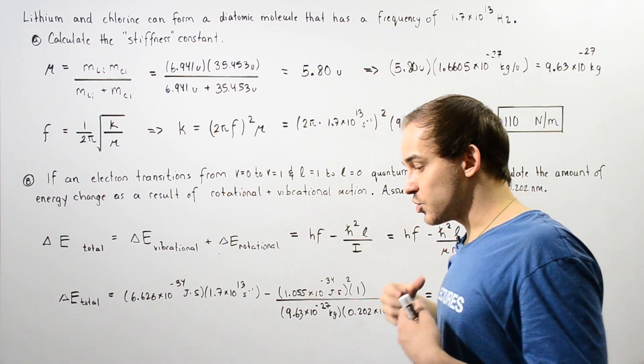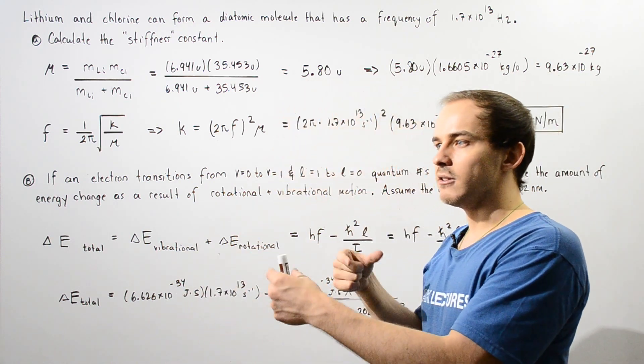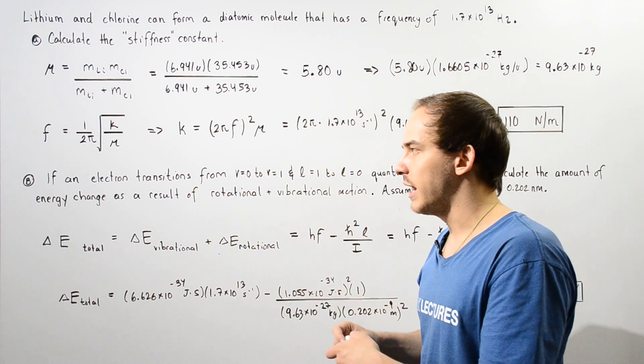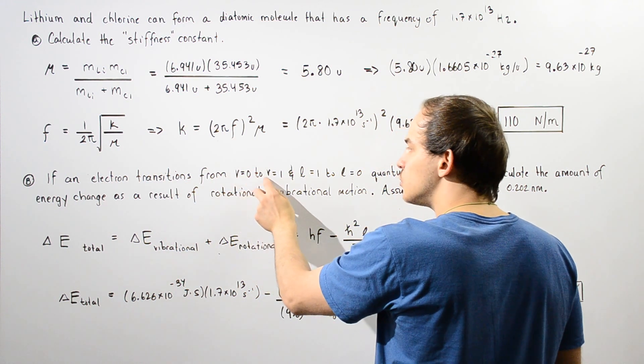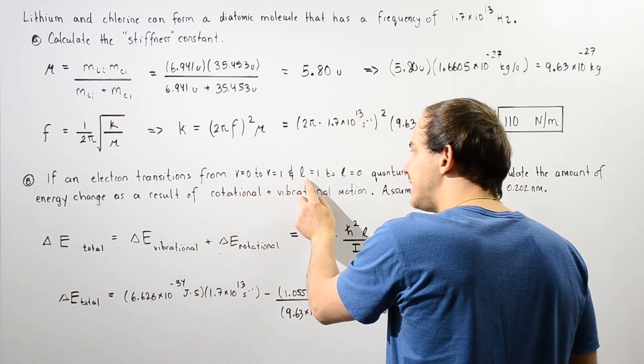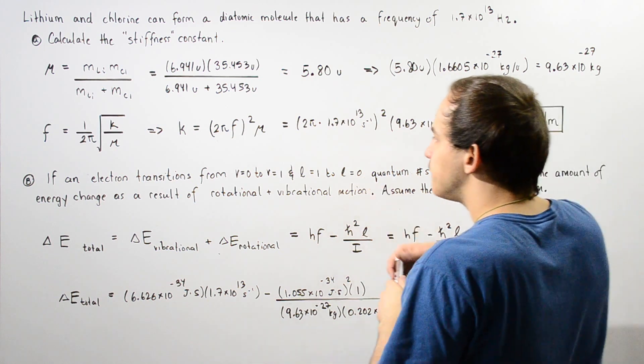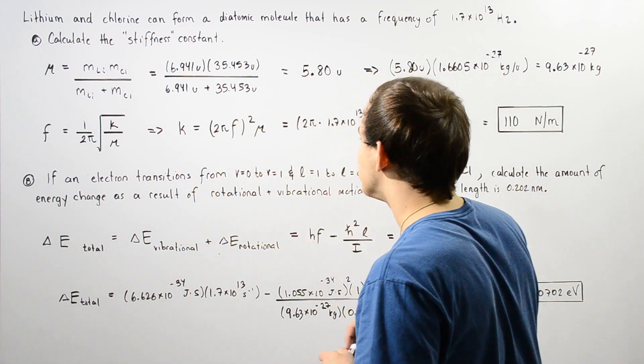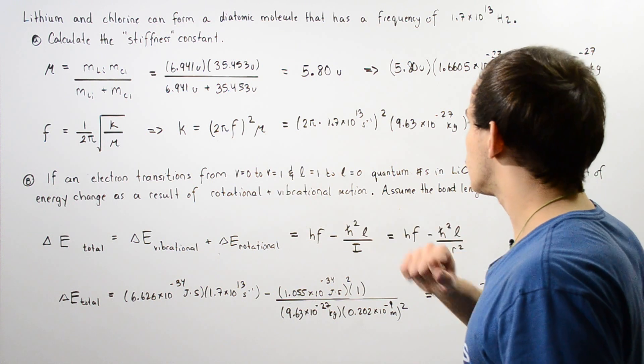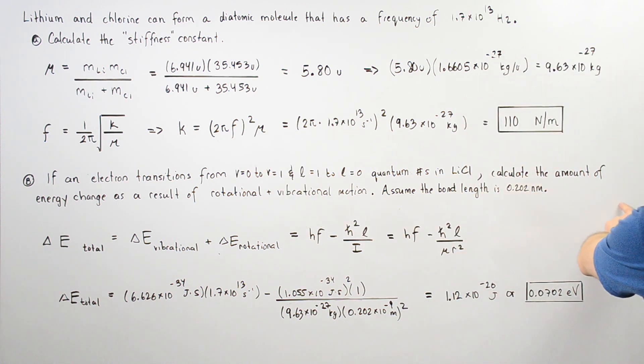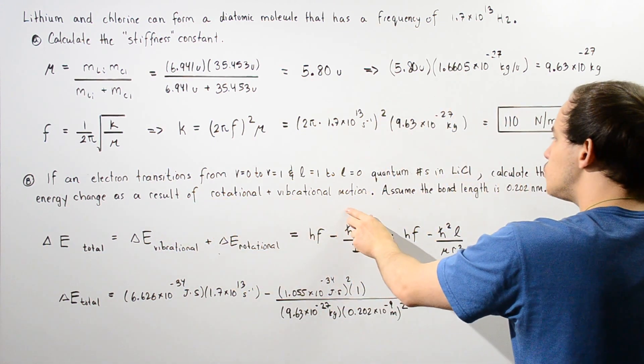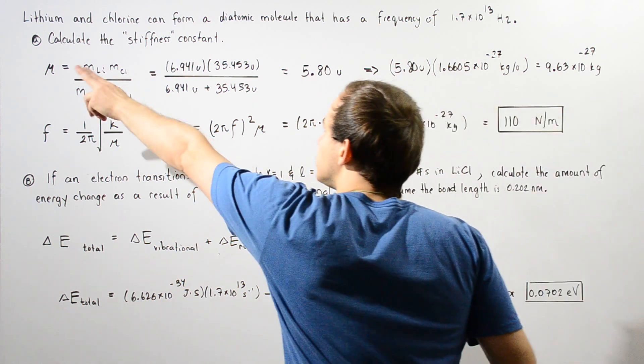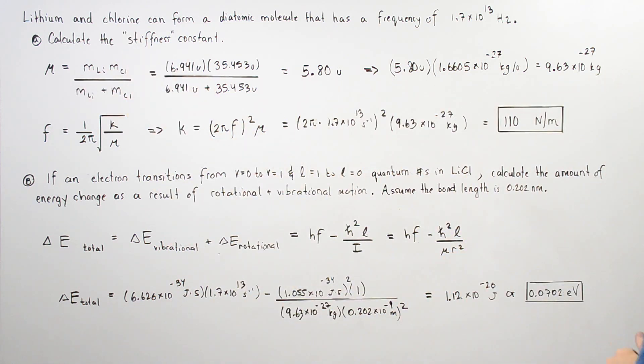Let's move on to part B. Now we want to assume there is an electron transition taking place. If an electron transitions from v equals zero to v equals one and from l equals one to l equals zero, where v is the vibrational quantum number and l is our rotational quantum number, calculate the amount of energy as a result of the rotational plus vibrational motion. Assume that the bond length between lithium and chloride is 0.202 nanometers.